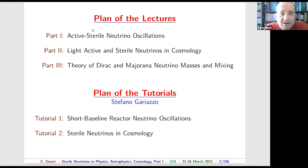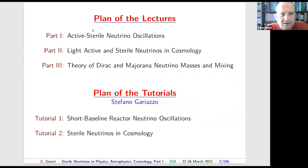I divided these lectures into three parts. The first two lectures are about active-sterile neutrino oscillations, where I will consider the effects of light sterile neutrinos which can give oscillations observable in different experiments. In part two, I will discuss the effect of light active-sterile neutrinos in cosmology, which will take about one lecture. The last two lectures will be about the theory of Dirac and Majorana neutrino masses and mixing.